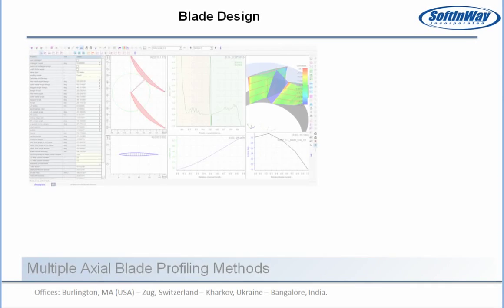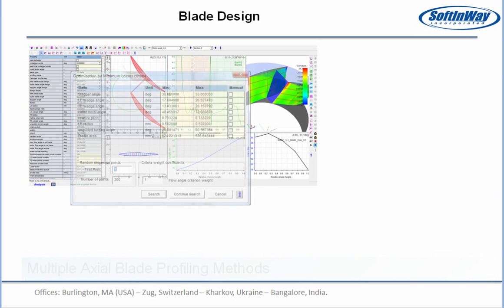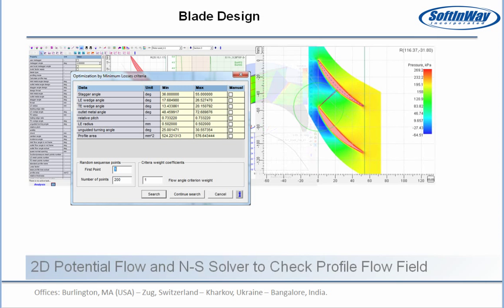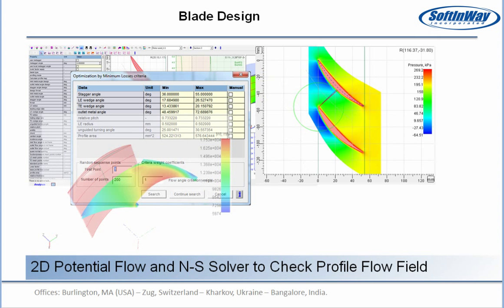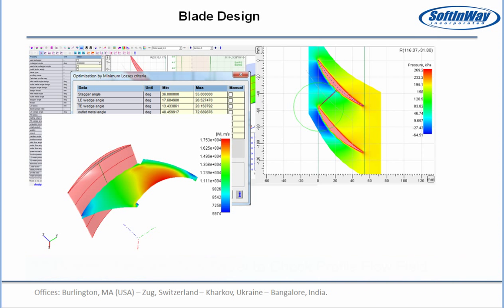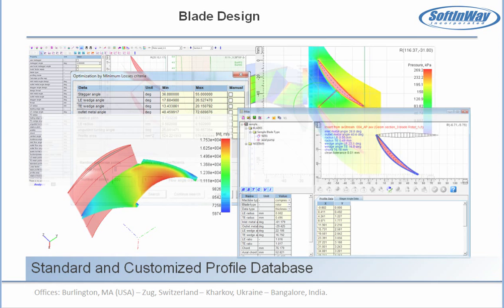We have a similar module for axial pump blade profiling. Blade profile loss can be optimized automatically. You can apply 2D potential flow or the Navier-Stokes equation solver to check the flow field of the profile. The profile can be saved as or uploaded from the standard profile in Atlas, our profile database.